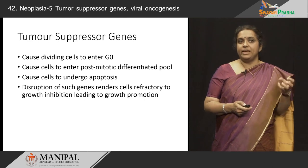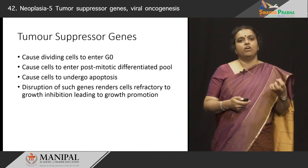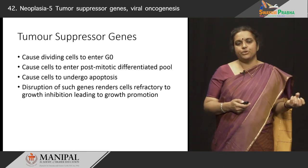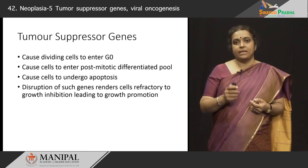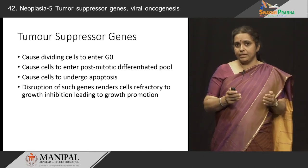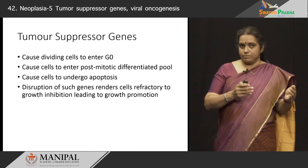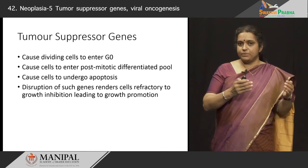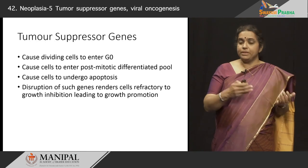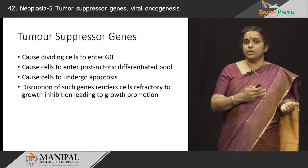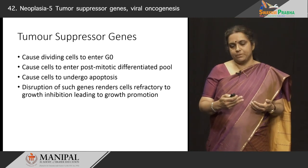Once these genes are inhibited or disrupted, cells become refractory to growth inhibition and this leads to growth promotion. In essence, cancer is a very delicate balance that is lost — the delicate balance that exists between the tumor suppressor genes and the genes that promote growth. In the previous class we learnt about growth promoting factors, and in this class we will learn about the tumor suppressor genes.